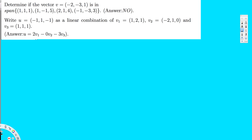Let's do this problem. The question is asking: determine if vector v = (-2, -3, 1) is in the span of these vectors. To do this, I have to arrange this as columns first. So this is going to be (1, 1, 1) multiplied by x, plus (1, -1, 5) multiplied by y.